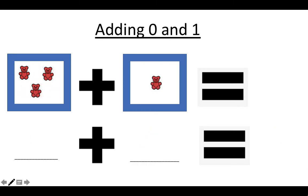What if we're adding one teddy bear? This time we're going to count how many bears we have in the first box: one, two, three, plus our one bear in the second box. We're going to put this big number in our head and then count on one more. Three, four. Three plus one equals four.